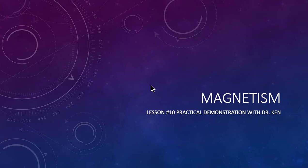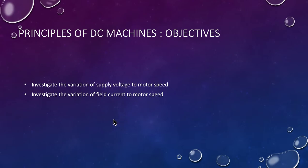Hello and welcome to Electromagnetism lesson number 10 practical demo. Dr. Ken with Hugh here again. So let's get underway. We're looking at the principles of DC machines and motors in particular. This time we're investigating the variation of the supply voltage to motor speed and also the variation of the field motor current to the speed of a motor as well.